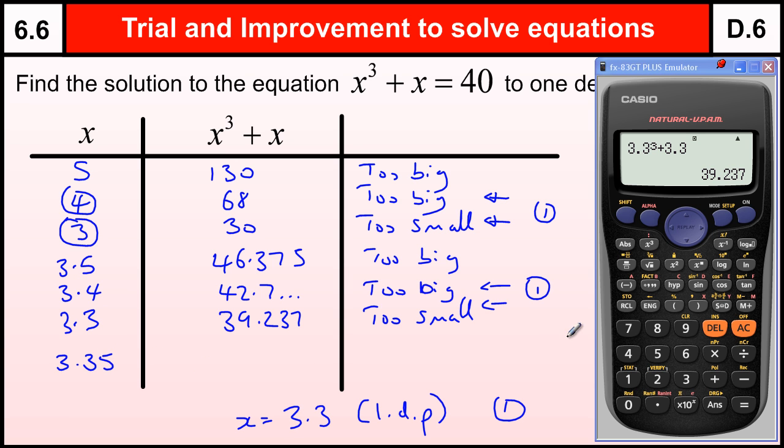They want you to show that the midpoint between the two values, the one decimal place, is actually in the right place, so we need to work this out. So 3.35 cubed plus 3.35 should show us that it's too big, so that's 40.945, so that's too big. Okay, and that shows us that it's definitely closer to 3.3 than 3.4, and that gets you one extra mark, so this is usually a four mark question for something that's fairly straightforward.